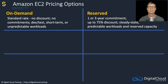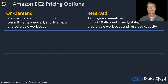Next up, we have reserved instances. In this case, you are committing. AWS is mostly about no commitments, but here you do commit and you'll get a discount for it — up to 75%. You commit for either one year or three years. This is for steady-state workloads, your line-of-business applications that aren't going anywhere and keep running year after year. It's predictable, so it makes sense to commit with AWS to get the best pricing.